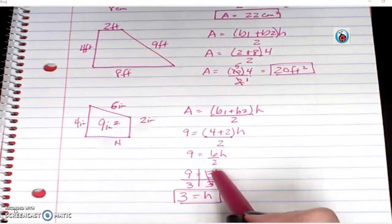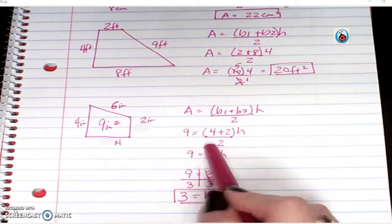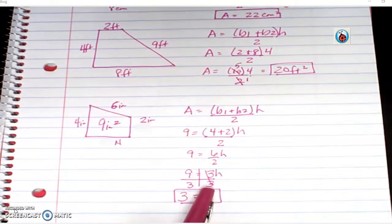So when working backwards, you're still going to plug in what you know, and then of course you're going to end up having to divide at the end to get the variable by itself.